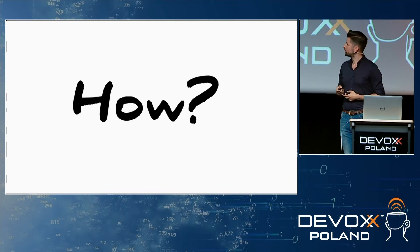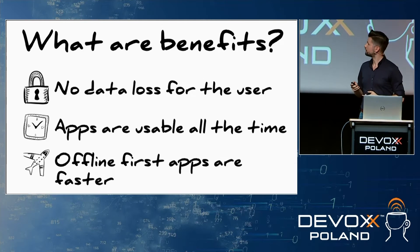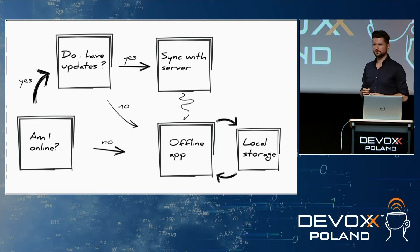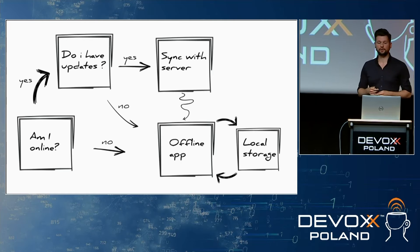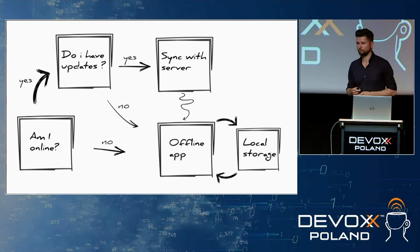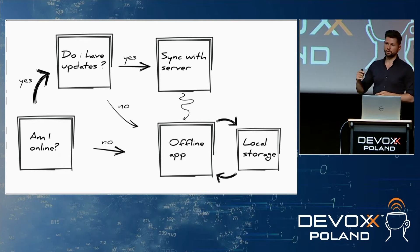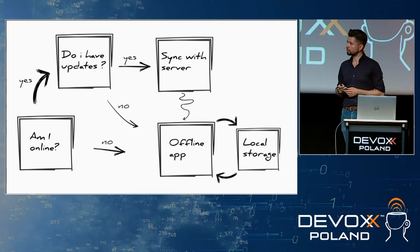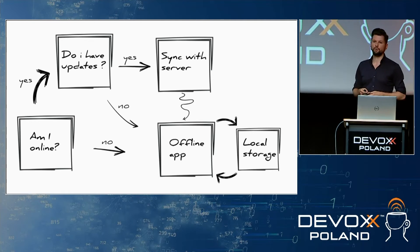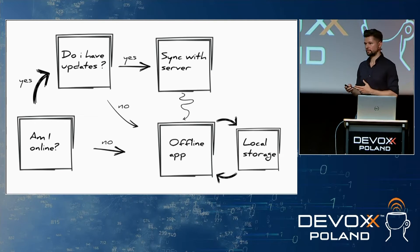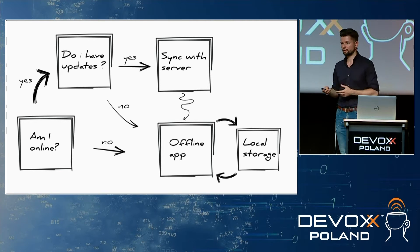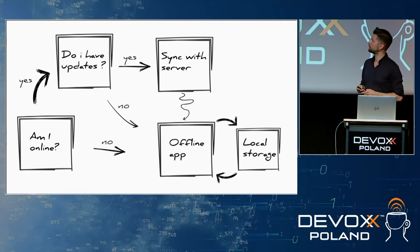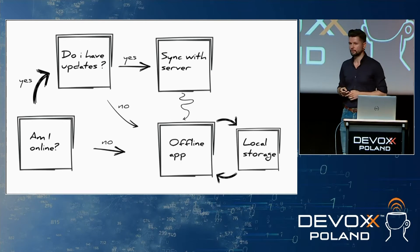Here we have a simple algorithm that every offline application should follow. First, the application needs to know what state it's in. If we are offline, the application should work as designed and use local storage. If we are online and have access to the application server, we should check if there are any updates or changes that need to be synchronized with the remote server, and if there are, synchronize them.